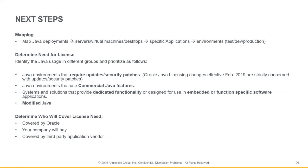And again, modified Java — anytime you make a modification to Java, whatever that application may be, the Java is already licensable. So we would take these in this order: updates, commercial features, dedicated functionality, modified. Once you have this down, you understand what needs to be licensed.